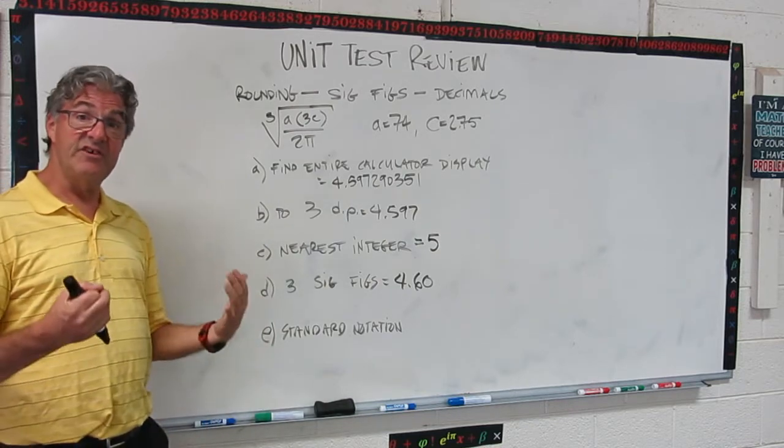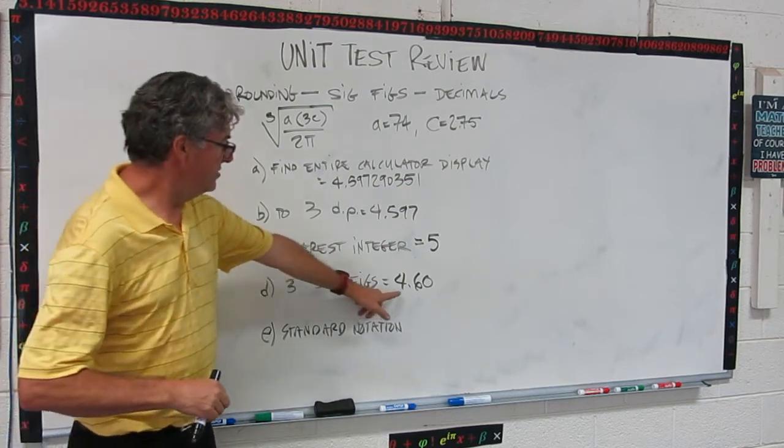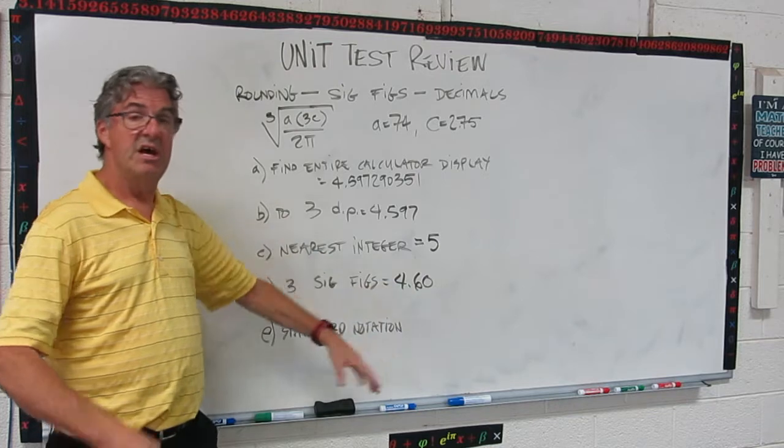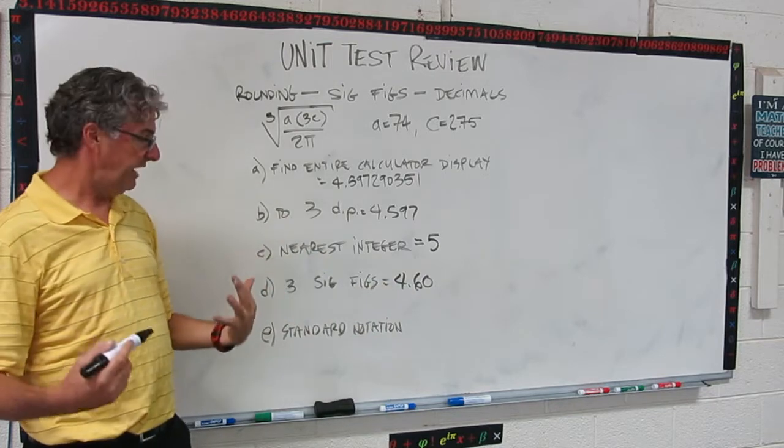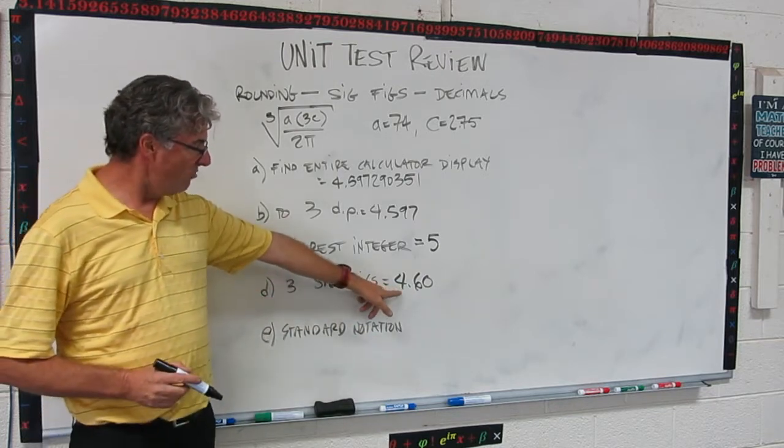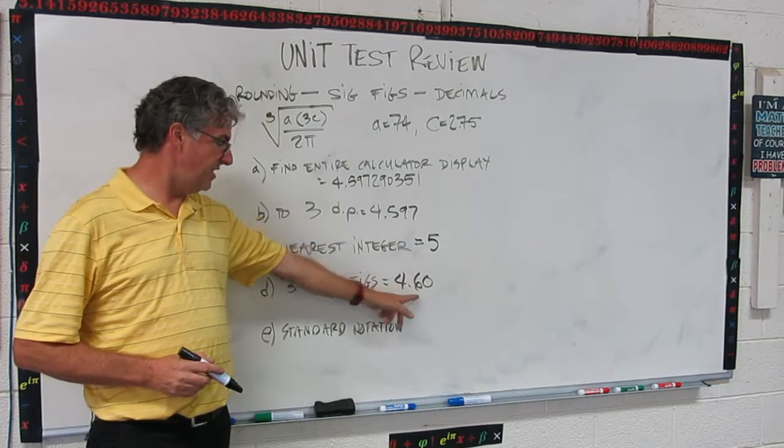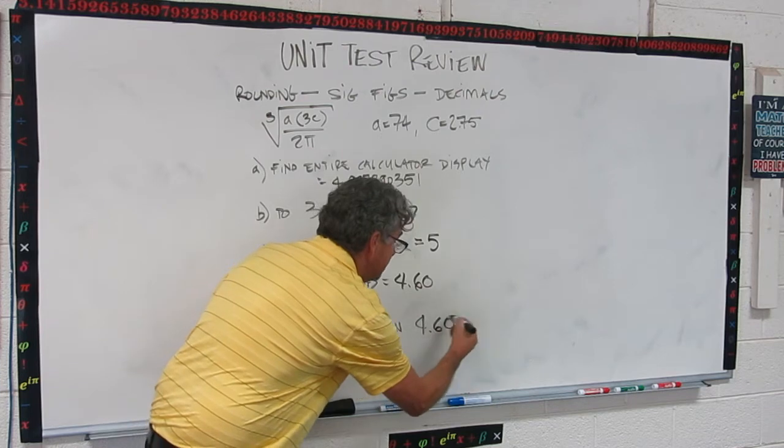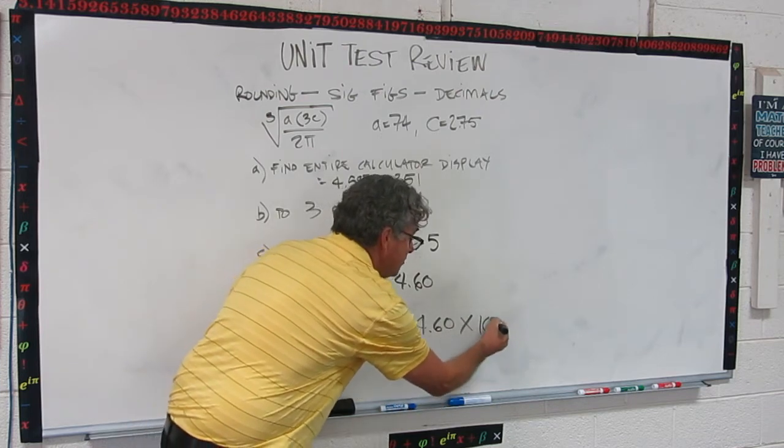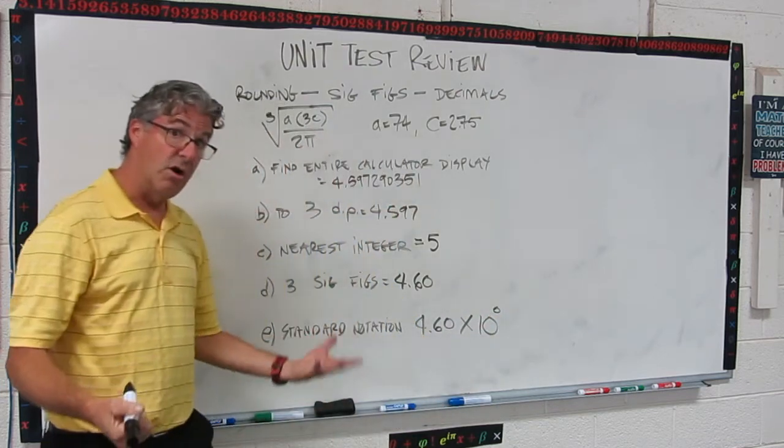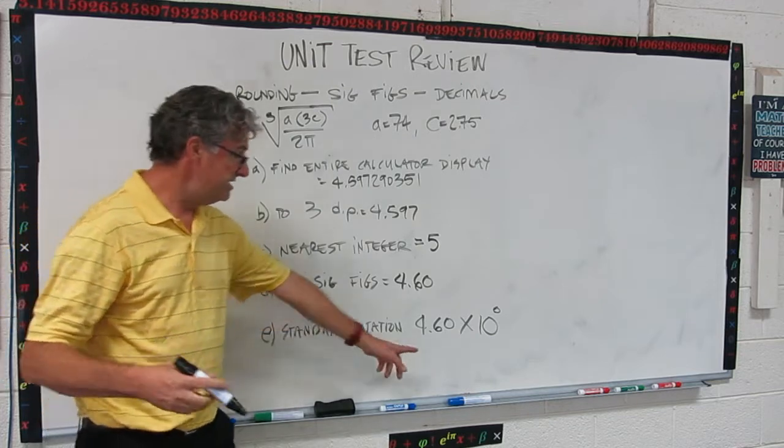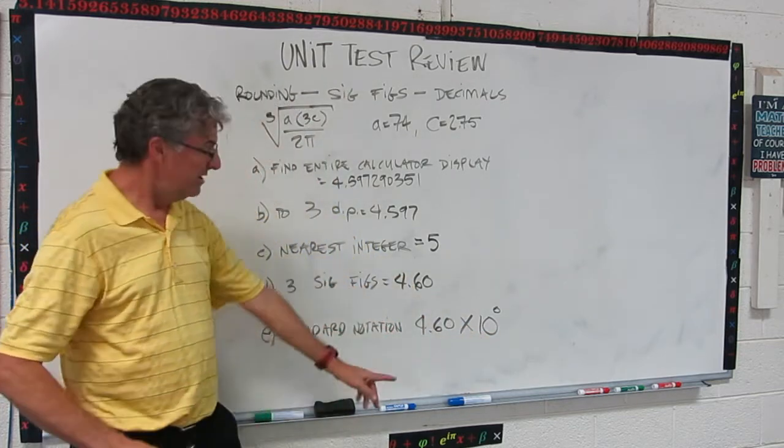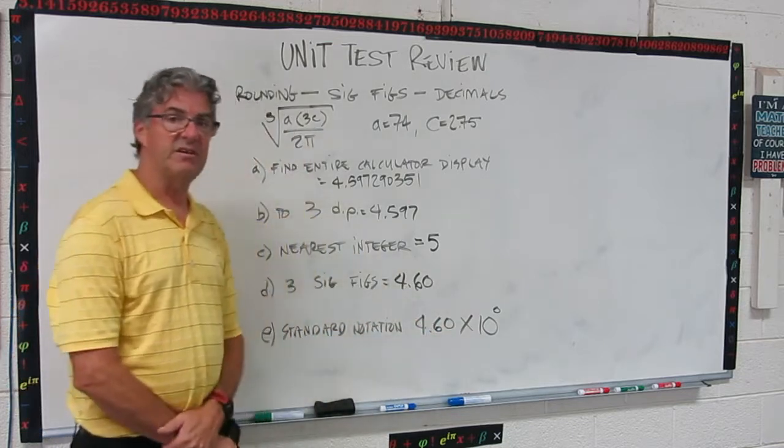Okay, scientific notation is just using three sig figs like that with a decimal in that place times ten to something. Now this is already 4.60. This is already in the right place. So this would be 4.60 times ten to the zero. Remember the zero power is one. So this is 4.60 times one, which is 4.60. So that's in standard or scientific notation.